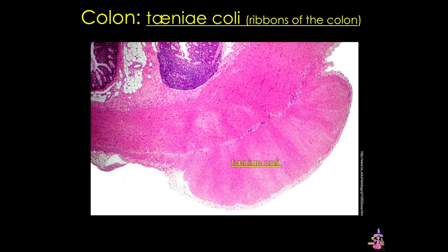Seen here is another view of the teniae coli, and also the serosa of the colon, which is continuous with the supporting mesenteries. The serosa also has very stereotypical sacs of adipose tissue, and those are another unique feature of the colon.